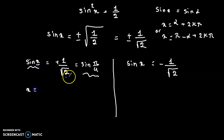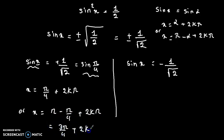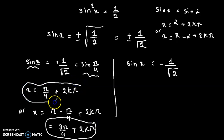So here we have two solutions: x equals pi over 4 plus 2k pi, or x equals pi minus pi over 4 plus 2k pi, which equals 3 pi over 4 plus 2k pi. Now for sine x equal to minus 1 over radical 2.